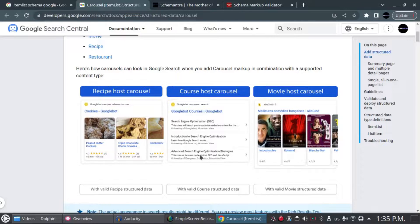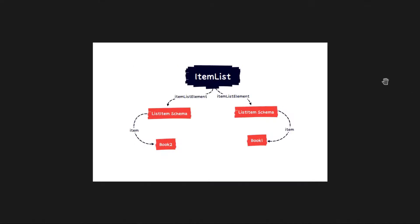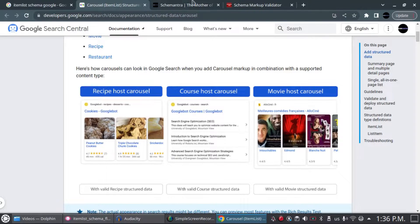Before we get started with the code, let's look at the flowchart I built. This is the ItemList schema — you start at the root, and out of the root you add a ListItem schema. Out of the ListItem schema you add the book, or whatever you have as a list. As we can see here, there are two books listed on the ItemList, and these books are related to the ItemList with a ListItem schema in the middle.